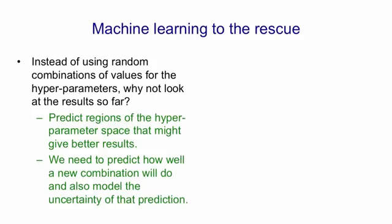It's not sufficient just to say how well we expect to do; we also have to have an idea of the uncertainty. We might have a region where we expect to do about the same as we're currently doing, but maybe we would do much better — in that case it would be worth exploring that region. It's even worth exploring regions where we expect to do worse, but we might just do a lot better.